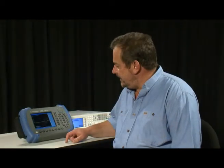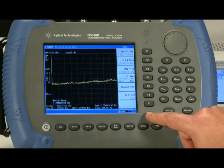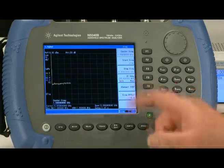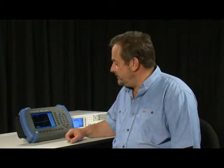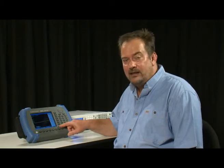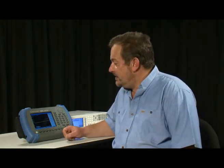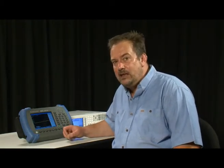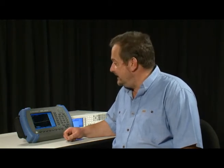And probably the most useful button on the entire instrument is the green preset button. Pressing this resets the instrument and puts it back to its factory default state. It is highly recommended that you always press that green button before starting a new measurement to make sure that any strange settings that a previous user may have set up within the instrument have been cleared.